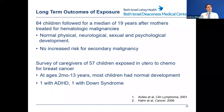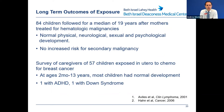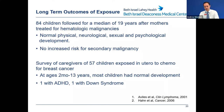For children born to women who received chemotherapy in utero, one of the largest studies followed 84 children for a median of 19 years after their mothers were treated for lymphoma. All 84 children had normal physical, neurological, sexual, and psychological development, with no detected risk for secondary malignancy in childhood. A survey of caregivers of 57 children exposed in utero to chemotherapy for breast cancer — followed for two months to 13 years — found most had normal development; one child had ADHD and one had Down syndrome, not considered statistically different from general population rates.